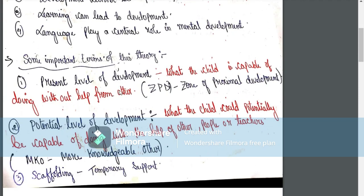Some important terms of this theory: ZPD — that is Zone of Proximal Development — refers to what a child could potentially be capable of doing with the help of other people or teachers. The more knowledgeable other and scaffolding — scaffolding is temporary support provided in learning.